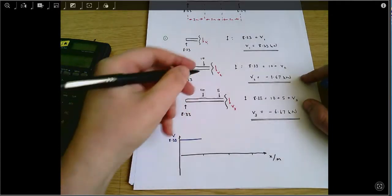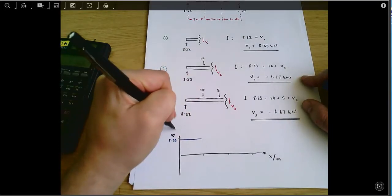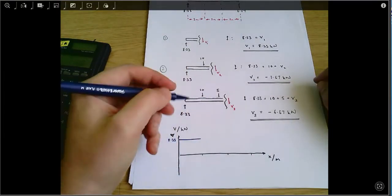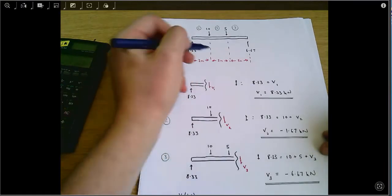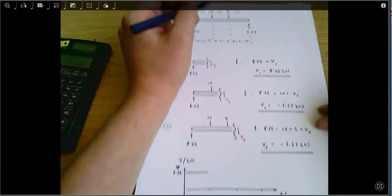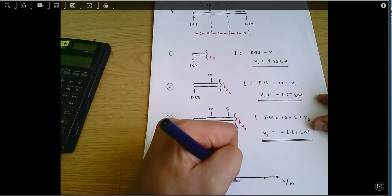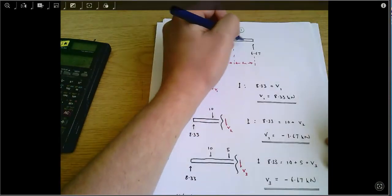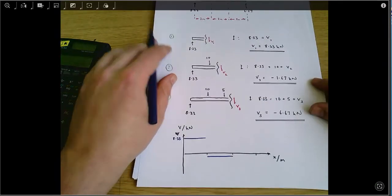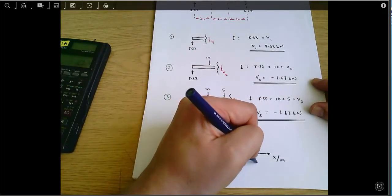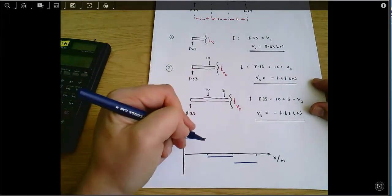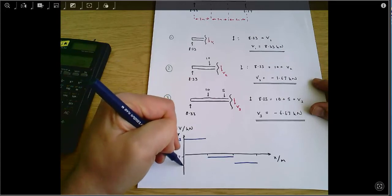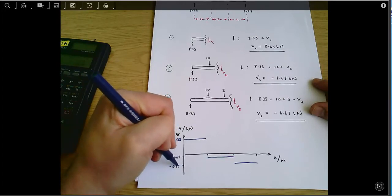All of region one has a shear force of 8.33, and I'll just be clear all of these shear forces are in kilonewtons. Then in region two, that's this region here from two meters to four meters along, we've got a shear force of minus 1.67. And in region three, that's this region here, we've got a shear force of minus 6.67. It's not drawn completely precisely but as long as I mark things on the axis I think that'll be fine.